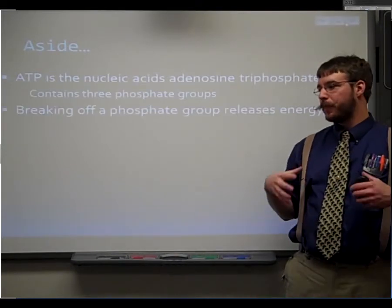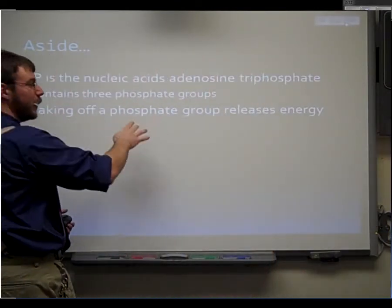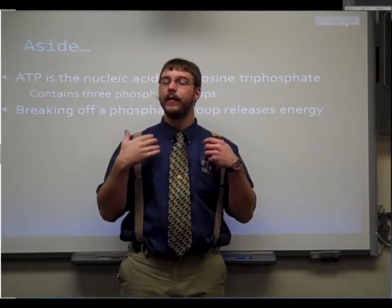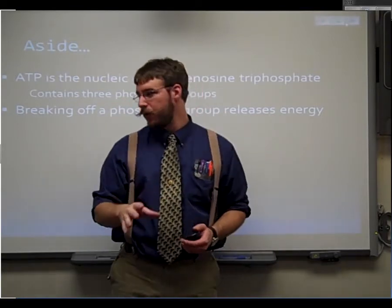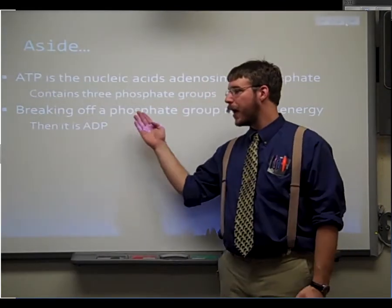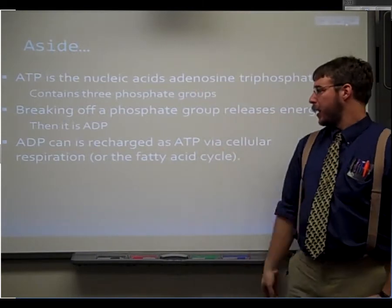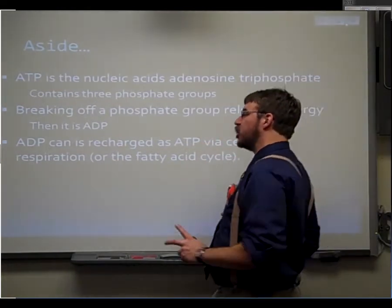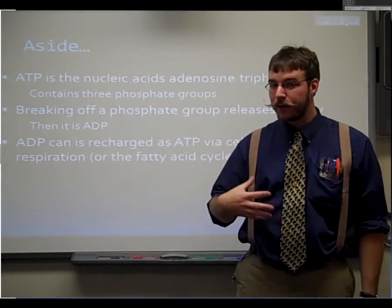Three phosphates are hanging out on an adenosine. What actually happens is when your body needs to do things that require energy, it breaks off one of those phosphates — just pops it off. In breaking that bond, because there's a catabolic process, that releases energy right into the environment where your cell needs to use it. Then what you have left is adenosine diphosphate — two phosphates instead of three. You can recharge the ADP back into ATP using cellular respiration, which is what the mitochondria does using sugar as a fuel.